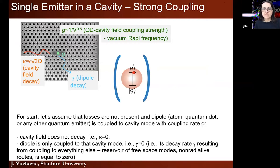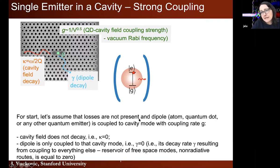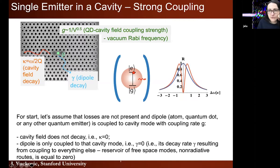We used the Jaynes-Cummings Hamiltonian to study the strong coupling regime of cavity quantum electrodynamics. In that regime, we first solved it without losses in the time domain, where we discovered Rabi oscillations: if you put an emitter in the excited state, light indicates a photon, the photon is reabsorbed, the emitter decays again, emitter to photon, reabsorbed photon back. So there is this exchange of energy between the optical field and the emitter that goes on forever in a lossless system.